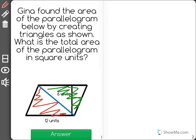Since the area of a triangle is 1/2 base times height, the red triangle has an area of 1/2 times the base is 12 units,